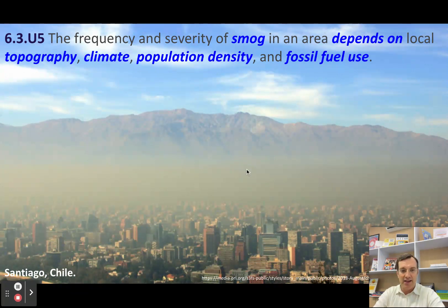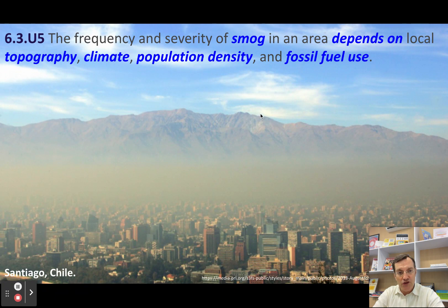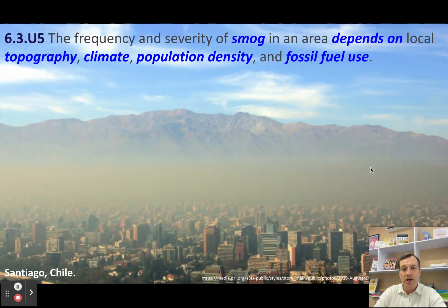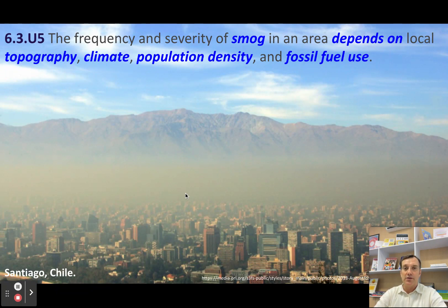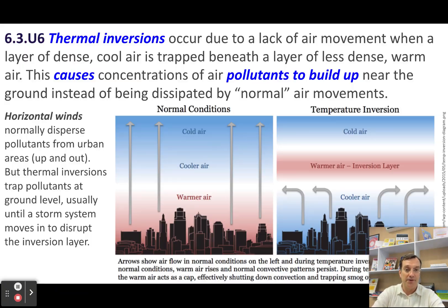This is what it looks like. I want you to look at the topography here — the shape of the land. You've got all these mountains in the background. Those mountains play a critical role in Santiago's smog problem, because those mountains are really what causes something called a thermal inversion.